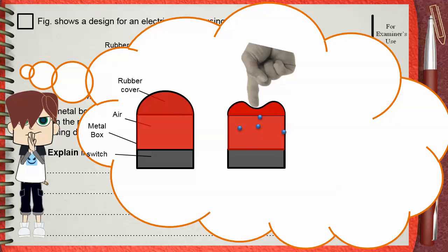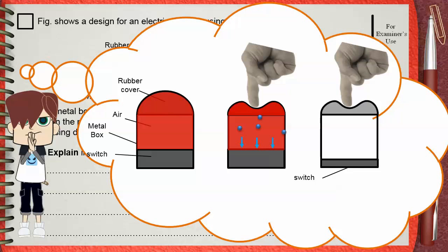This increased pressure causes an increased force on the switch so it's pushed down and becomes on. Now let's explain this.